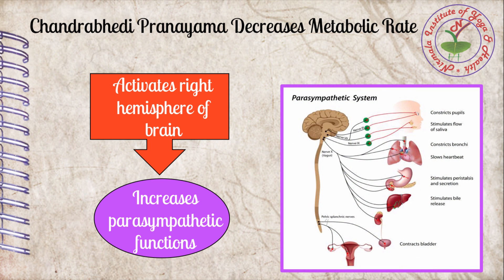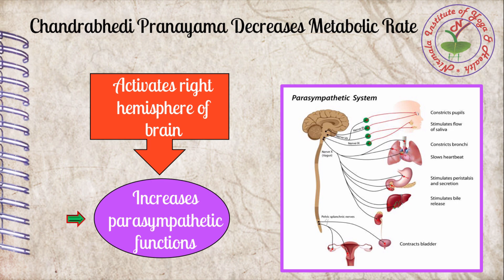As different portions of the hypothalamus regulate blood flow in the two cerebral hemispheres, the dominant blood-rich hemisphere — here the right hemisphere — controls all the parasympathetic functions of the body. Thereby metabolic rate decreases, and body temperature also decreases. In this way, chandrabhedi pranayama decreases metabolic rate.